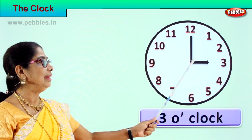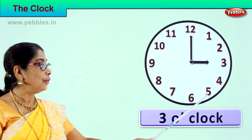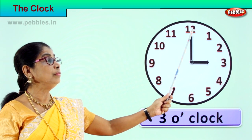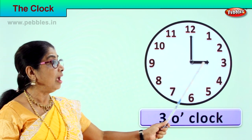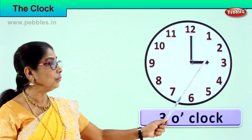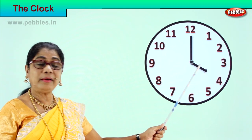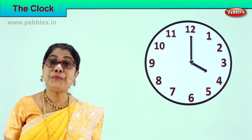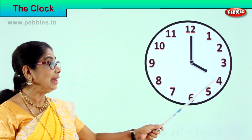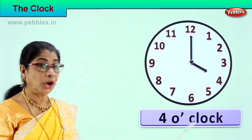Now the minute hand goes from one to two, three, four, five, six, seven, eight, nine, ten, eleven — it comes back to twelve and the hour hand shifts from three to four. The hour hand is now pointing towards four. What is the time? We read it as four o'clock.